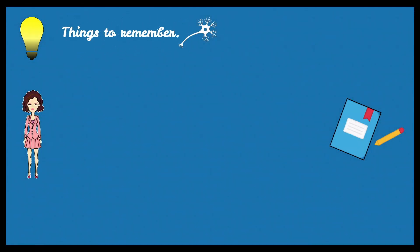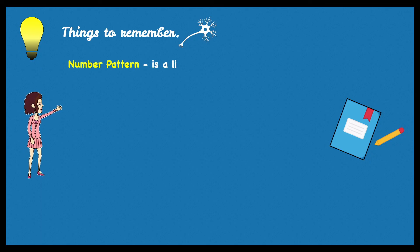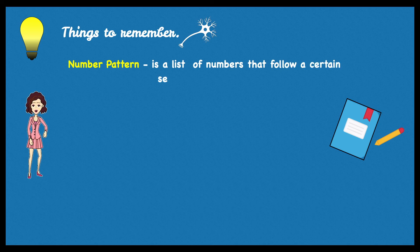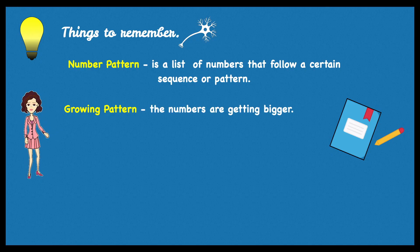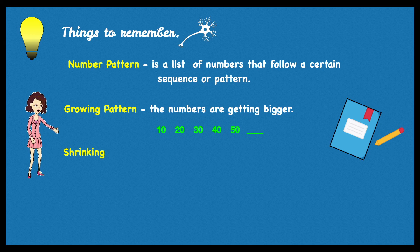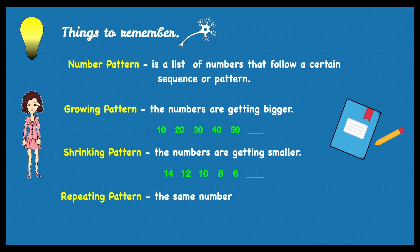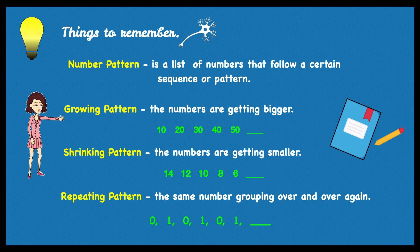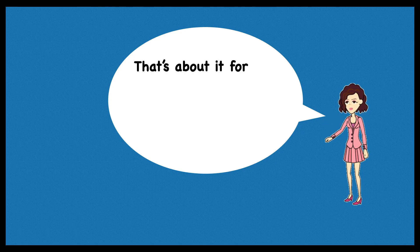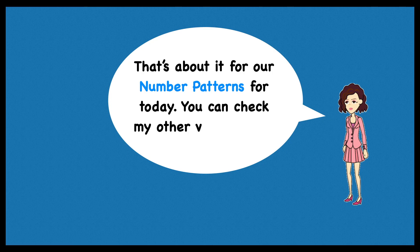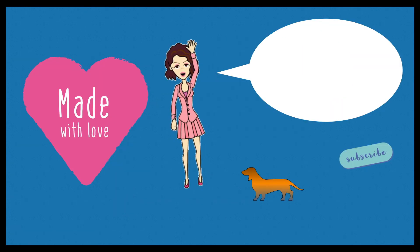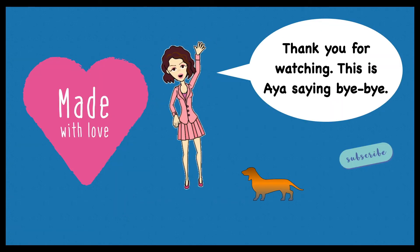Things to remember: A number pattern is a list of numbers that follow a certain sequence or pattern. Growing pattern — the numbers are getting bigger. Shrinking pattern — the numbers are getting smaller. Repeating patterns — the same number grouping over and over again. That's about it for our number patterns for today. You can check my other videos about patterns. Thank you for watching. This is Aya saying bye bye. Bye.